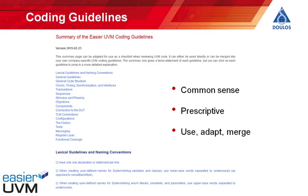Where UVM gives you choices, the guidelines prescribe a specific way of doing things. Sometimes that specific way will just be really good advice; sometimes it's an arbitrary decision to do things one way rather than another. You can use the entire set of coding guidelines as a checklist on your project, adapt them to your own purposes, take only the few guidelines you find particularly useful, or merge them with your own project-specific or company-specific coding guidelines.